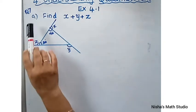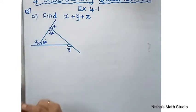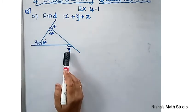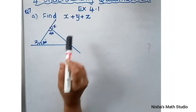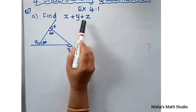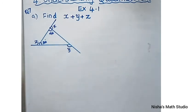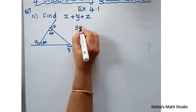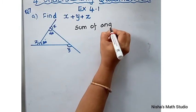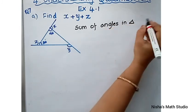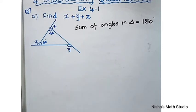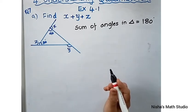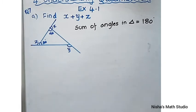Next we will see question number 7, part A: find X plus Y plus Z. The diagram given is a triangle, and X, Y, and Z are the exterior angles of the triangle. The interior angles given are 30 and 90 degrees; the third interior angle is not given. First, let me find the third interior angle. The sum of angles in a triangle is 180 degrees.